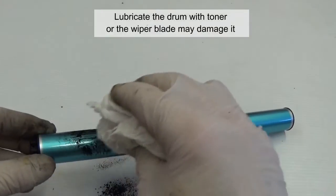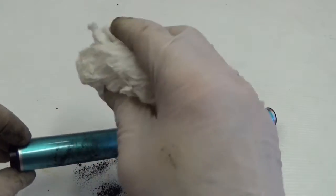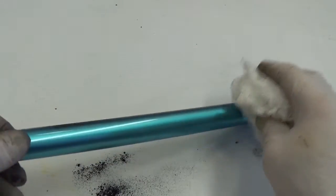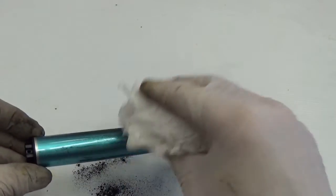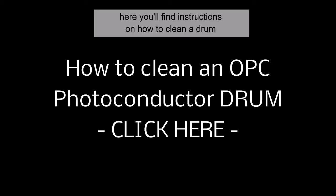Lubricate the drum with toner or the wiper blade may damage it. It's better to replace the drum, but if you want to reuse it, here you'll find instructions on how to clean a drum.